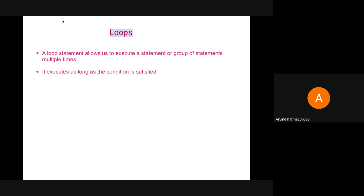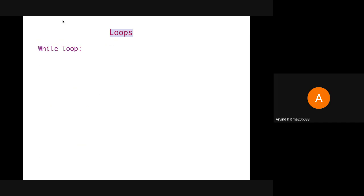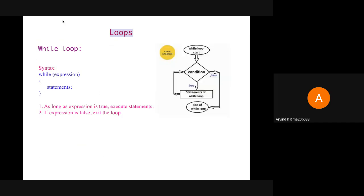Next is loops. Whenever we want to repeat the execution of a set of statements, we use a loop. The loop executes as long as the condition is satisfied. As shown in the flowchart, first the condition is checked. If the condition is true, the code gets executed once, then the condition is checked again. This repeats until the condition becomes false, then the loop gets terminated. The first loop construct is the while loop. In the syntax, we use the keyword while with an expression within parenthesis, and we mention the set of statements within it. The value of the expression must change within the statements, or else it becomes an infinite loop.